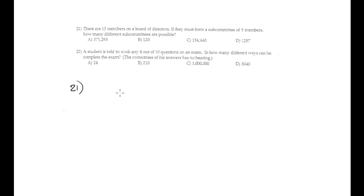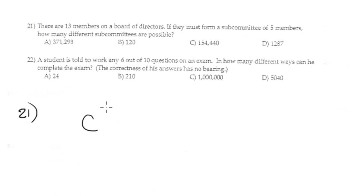Okay, 21 is a combination. It's a combination because we have no category, we have just a member. 13 members taking 5.